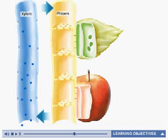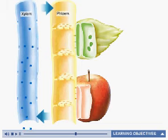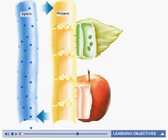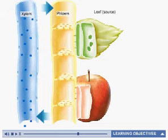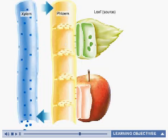The most commonly transported sugar in plants is sucrose. Sucrose transport begins in the leaves. The term source is used to describe an area of sugar production. Leaves, which are the main sites of photosynthesis and production of sucrose, are the main sources in the plant.